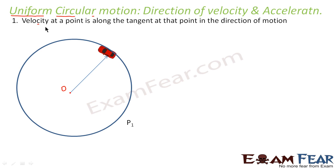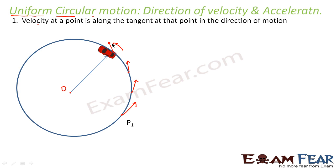What would be the direction of velocity at any point? It would be tangential. The velocity at point P1 would be tangential to P1, and similarly at every other point it is a tangent. So the velocity at every point keeps changing because it is tangential at every point, and also the velocity is in the direction of motion.